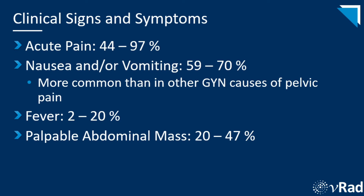The clinical signs and symptoms are nonspecific and include, most commonly, acute pain, followed by nausea and vomiting — which is more common than in other GYN causes of pelvic pain. This is a major take-home point: if you see nausea and vomiting in a history, increase your suspicion for adnexal torsion. Fever and palpable abdominal mass are less common. The history becomes more important on CT or MRI examinations. Use the history provided by the tech worksheets as well, since you may get more detailed information from the patient.